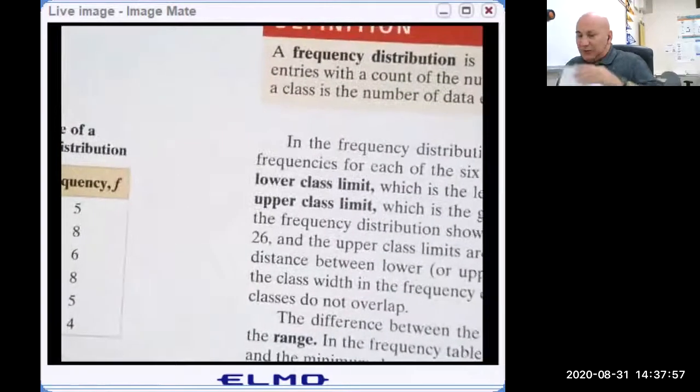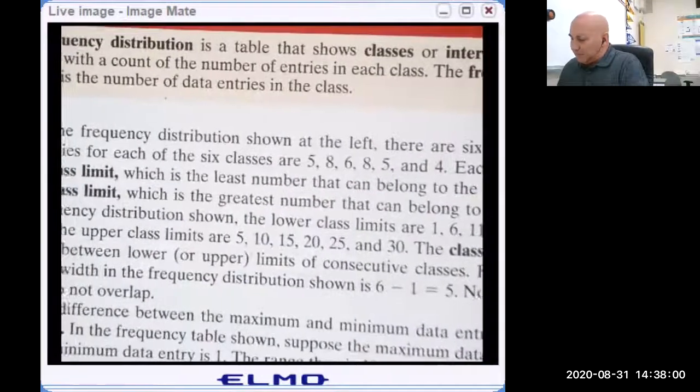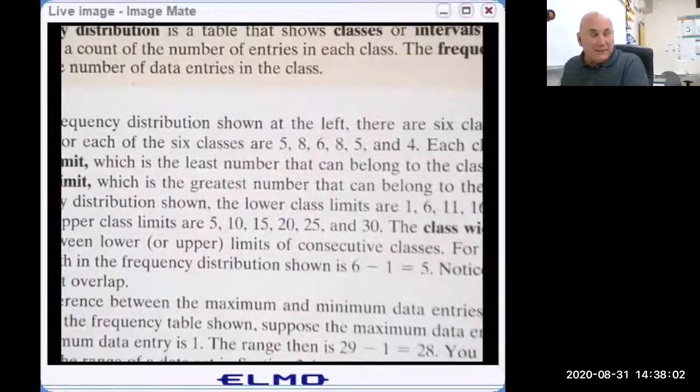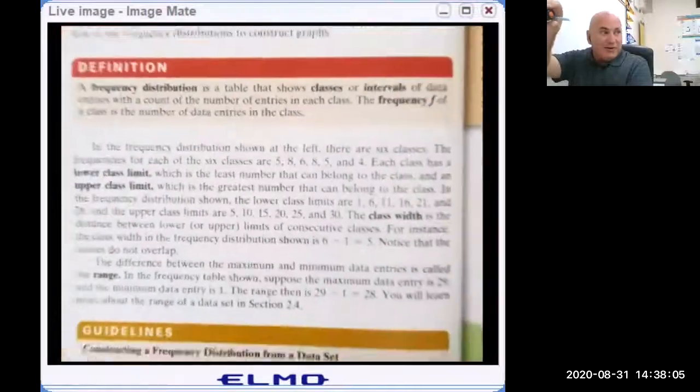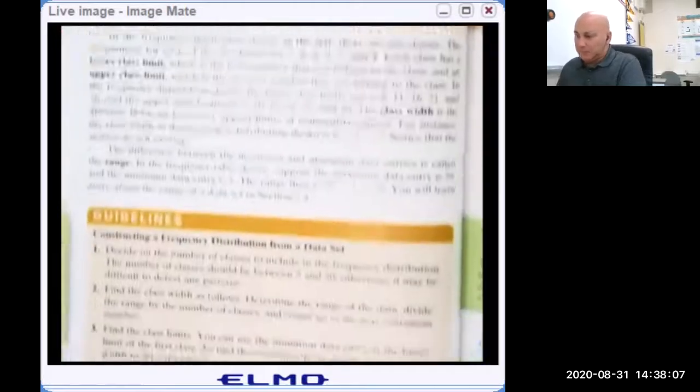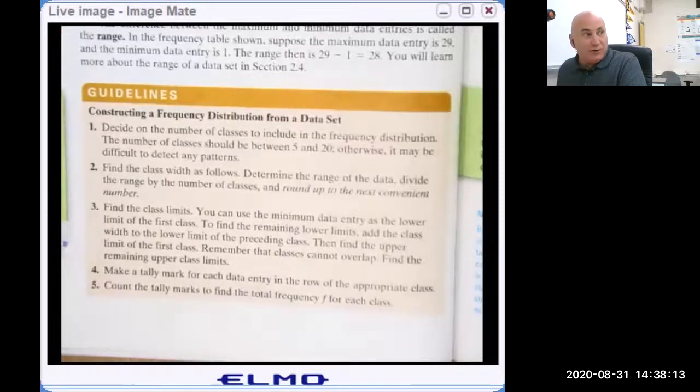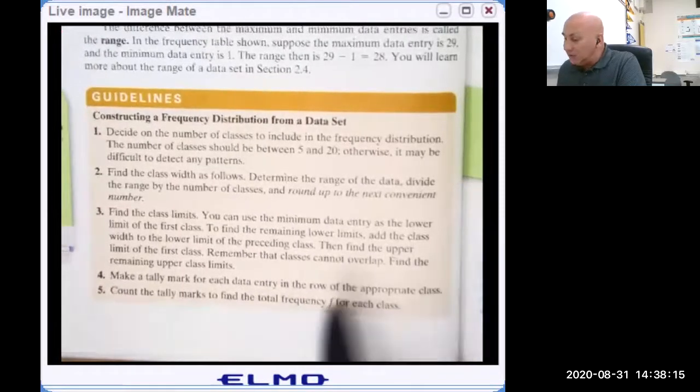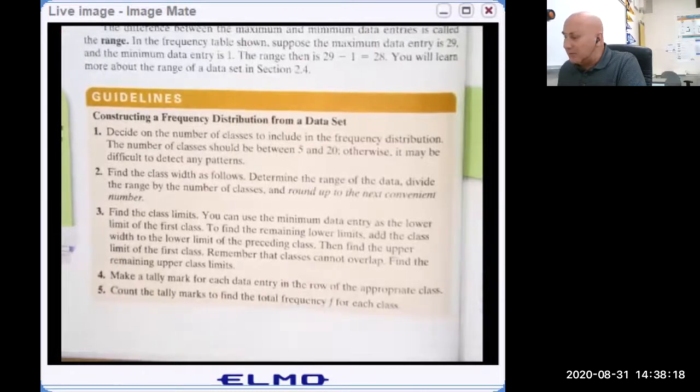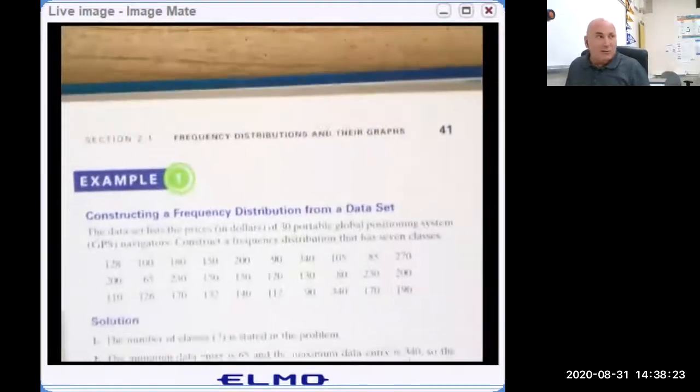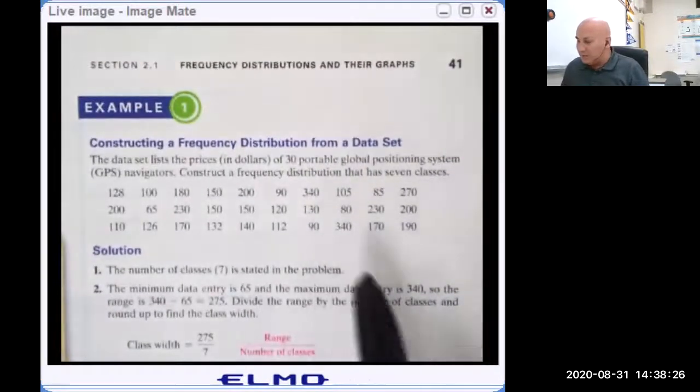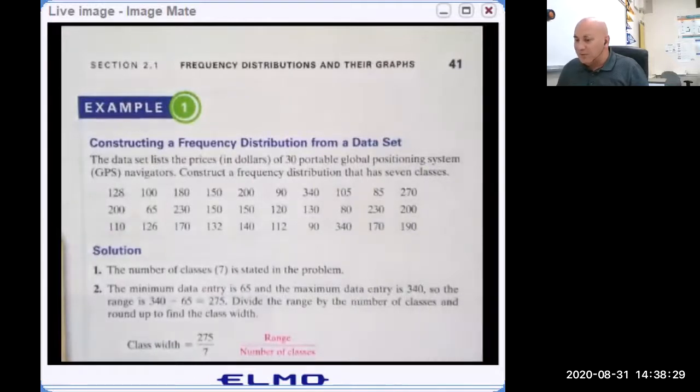To construct a frequency distribution from a bunch of data, we have the guidelines at the bottom of page 40. We will go over these in detail in class. It wouldn't hurt to read them in advance so that you know what to expect. In class, we're going to go step by step through this example problem, number one in the book, and we'll explain each step exactly what they're doing and how it relates to the five-step guidelines we looked at just a moment ago.